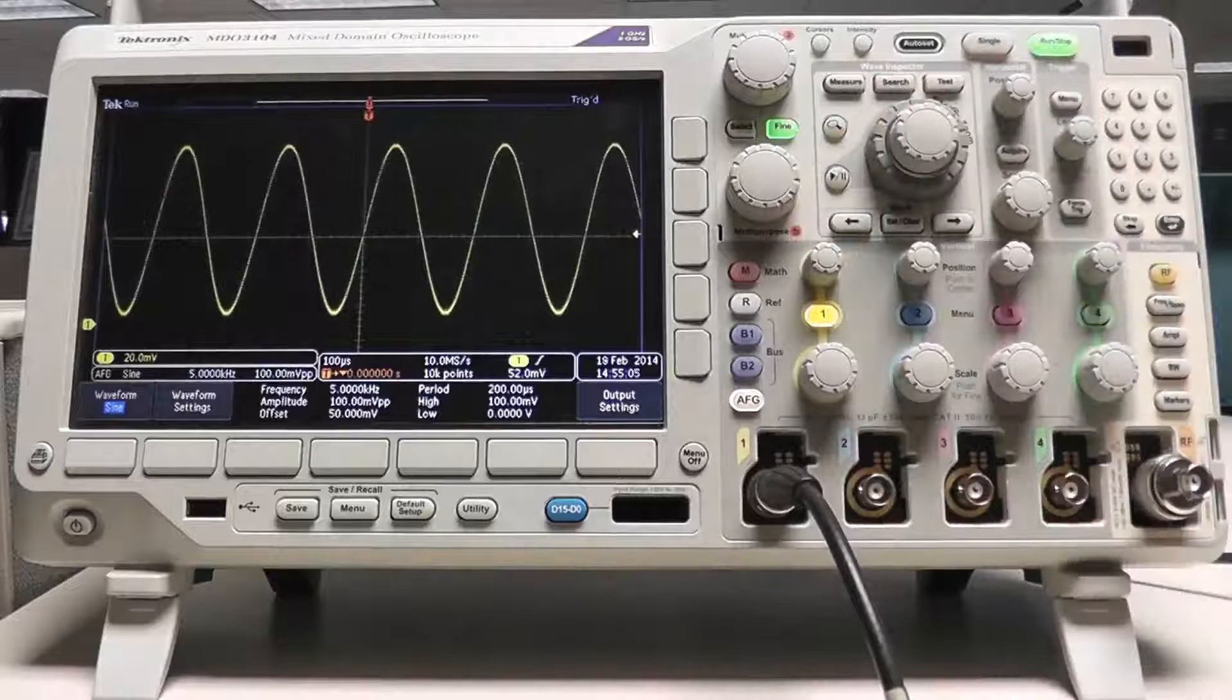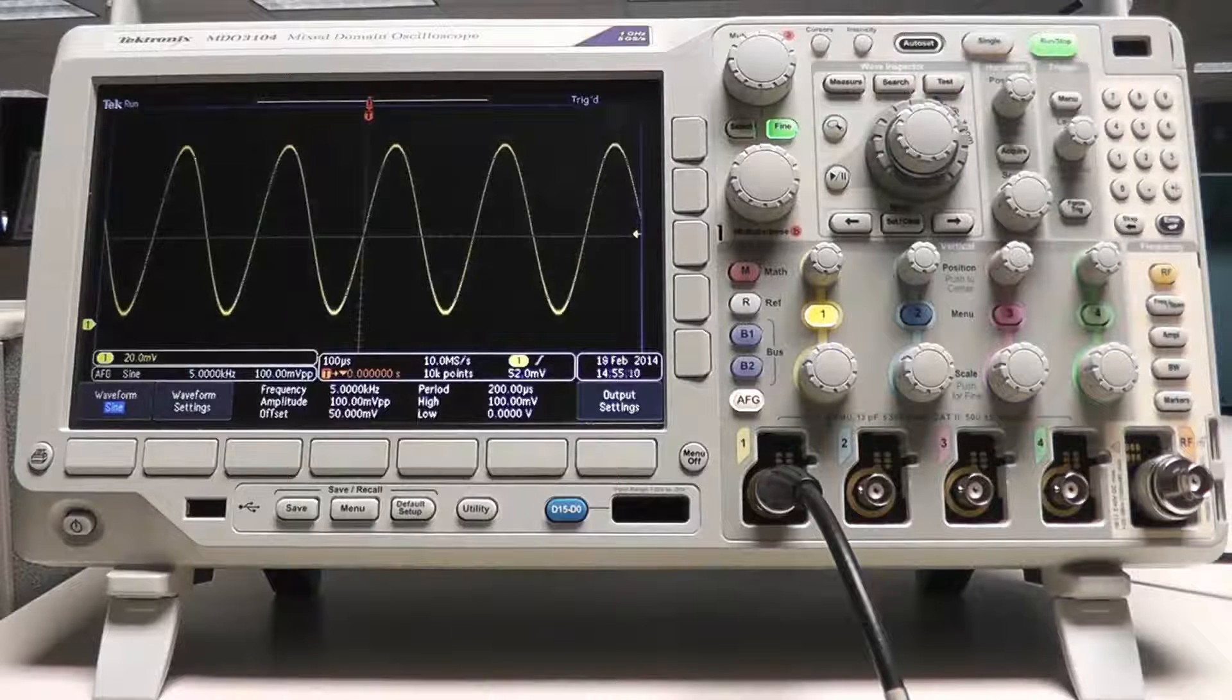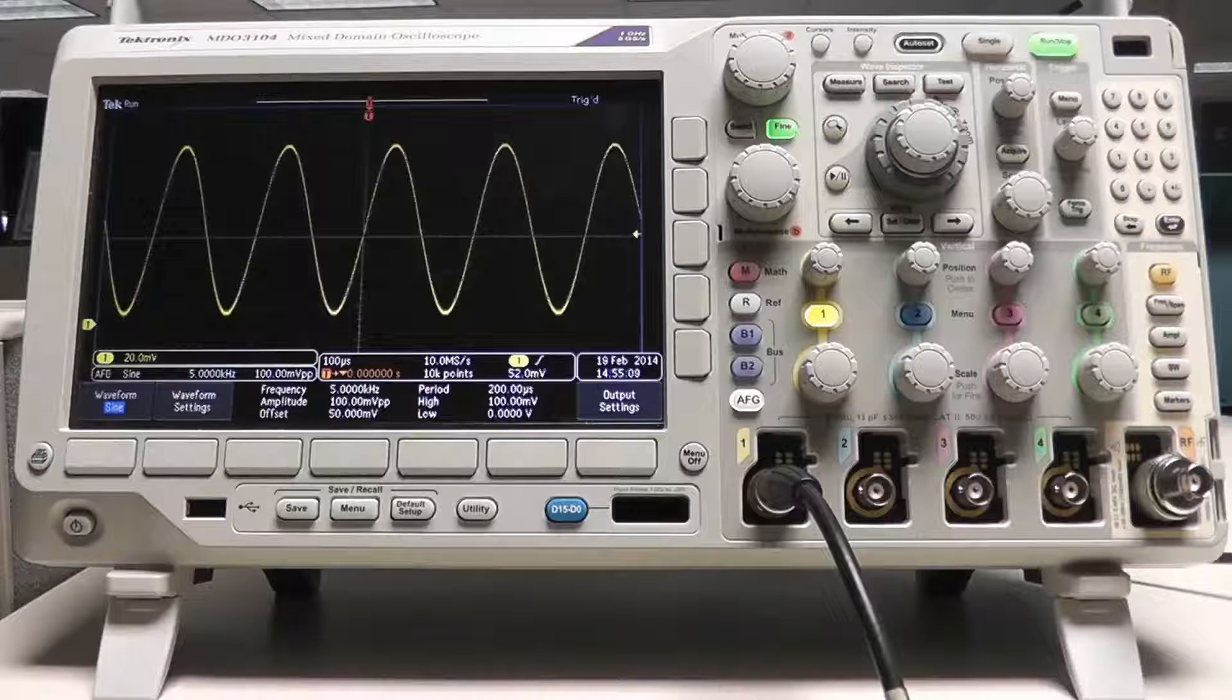I'm using the AFG to generate a 5kHz 100mV peak-to-peak sine wave with a 50mV offset and acquiring it on channel 1.